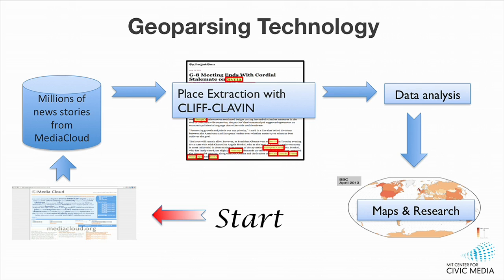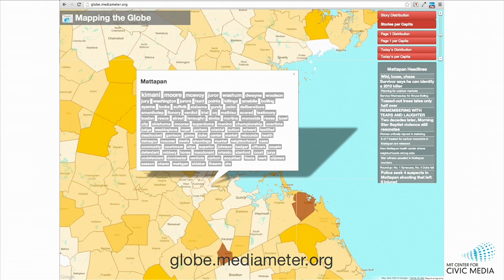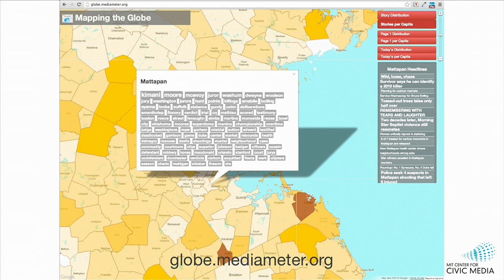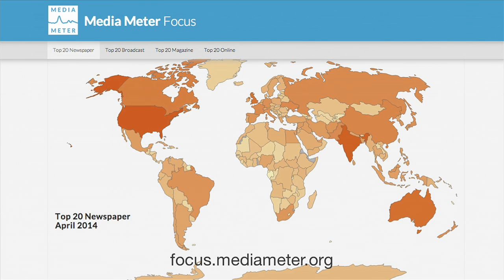Geoparsing is the process of extracting place data from unstructured text like news articles. This helps us look at news stories at scale and come to conclusions about long-term patterns, trends, and biases in media attention across news sources. For example, your research might inquire what coverage towns in greater Boston are getting, or do a geographic media analysis of the Boston Marathon bombings, or build an interactive tool that helps media researchers search for stories with geographic dimensions.